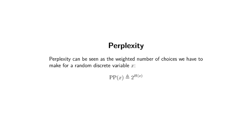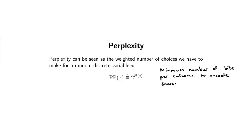We're now just looking at perplexity. I'm going to simplify it — we're just looking at one source, one random variable called x. x can take on a bunch of outcomes, and based on that random variable you will have a different perplexity or a different entropy. Entropy is formally defined — you can look it up on Wikipedia — but I'll write it out: it's the minimum number of bits per outcome to encode source x on average.